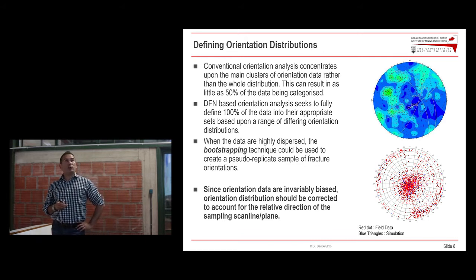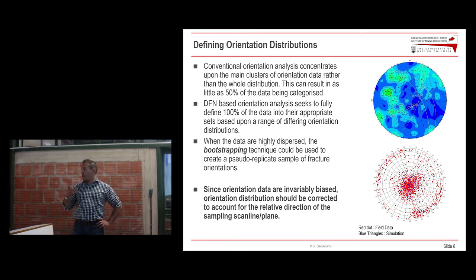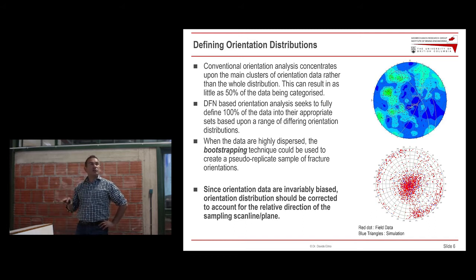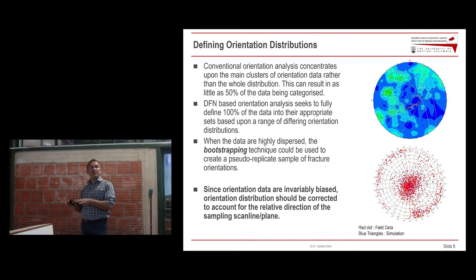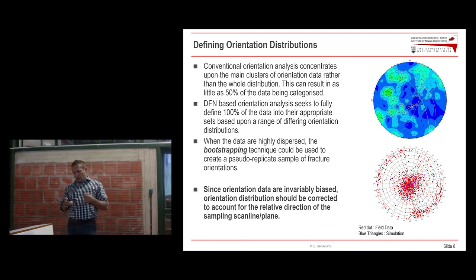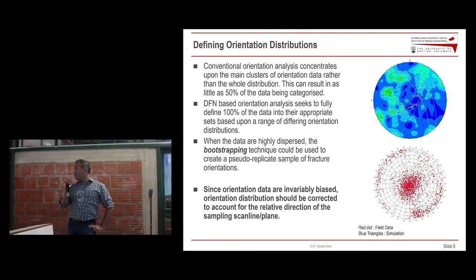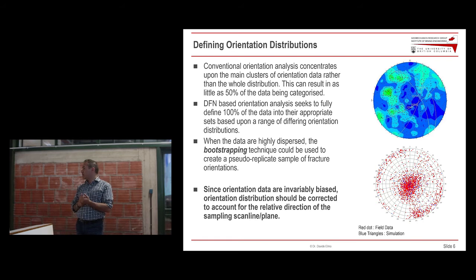We have different types of distributions available — Fischer distribution, Bingham distribution, bivariate distribution — or we can use a bootstrapping approach, which is not a true statistical distribution but a method to sample the stereonet. We generate some dispersion of the collected data and create a pseudo-replica of our mapped data. Especially when using any type of distribution, we have to remember that orientation data is biased depending on the orientation of the borehole or the sampling plane. So we always have to correct the data to account for orientation bias.